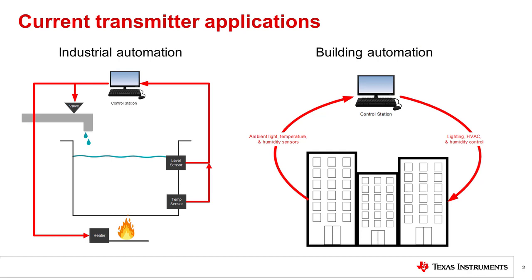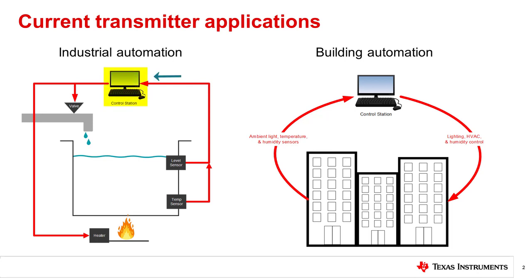Industrial and building automation are becoming more common to reduce cost and increase efficiency. The addition of automation can save energy in a building or increase the speed and quality of work in industrial applications. In an industrial facility such as a manufacturing site there are field sensors, actuators, and motors that monitor and carry out process controls. Things such as level sensors, temperature sensors, valves, and heaters may control the level and temperature of liquid in a tank. In a large building or across the campus of several buildings, many monitoring devices control systems such as lighting, HVAC, or humidity control. Process control allows for these automations. The sensors and monitoring devices need to be able to send their process variables to the control stations, sometimes over very long distances. The control stations then transmit control data to the field devices to perform a task. This lecture will introduce the advantages of current transmitters in these applications.